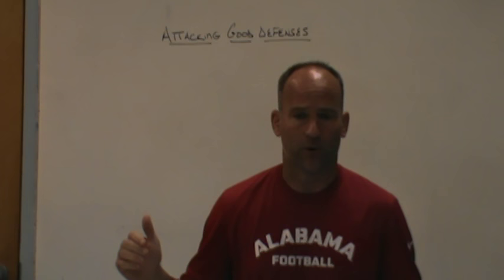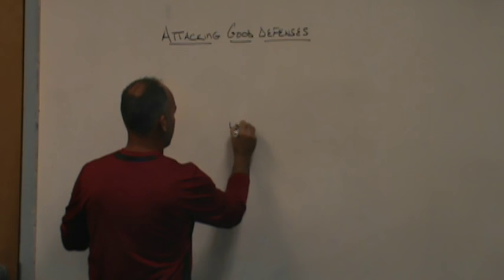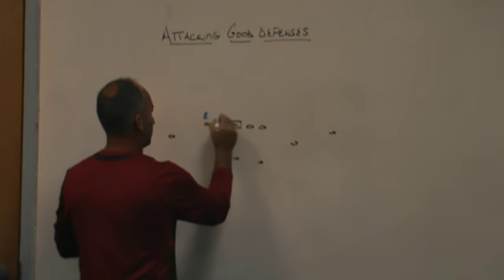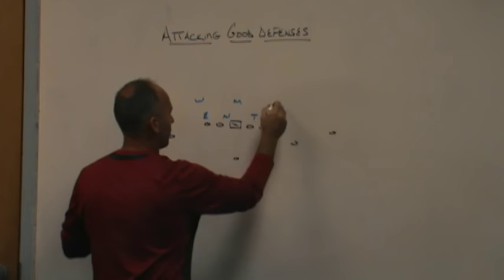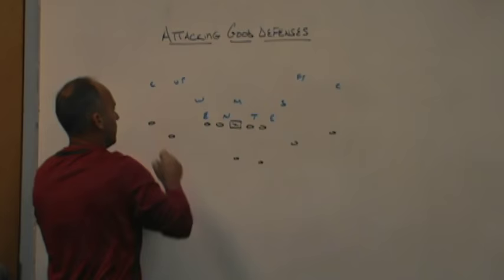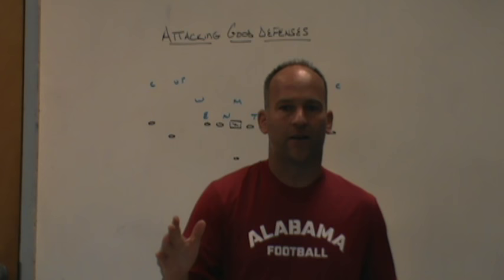If we're playing a team that's a good squeeze team with their defensive linemen and I want to get the ball to the perimeter, one of the first things I'm going to do is run jet sweeps or power reads. If they're going to be a 2-high team, I'm going to run theories that stimulate the defensive end to squeeze down inside so I can get the ball to the perimeter.